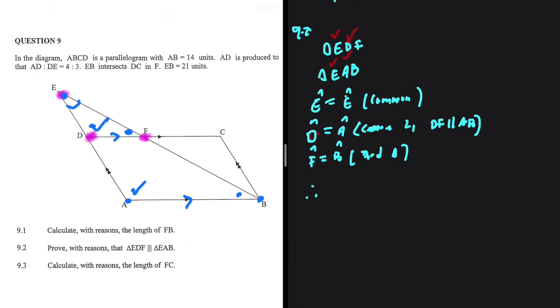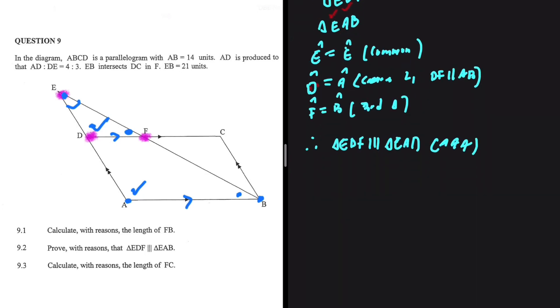So now we can go ahead and conclude and say that triangle EDF is similar to triangle EAD. Angle, angle, angle. That is 9.2.